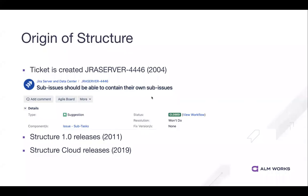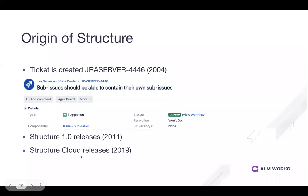Where did Structure start? The origin of Structure is actually this JIRA ticket — JIRA Server 446, created in 2004. Somebody suggested that we should be able to show sub-issues being contained within their own sub-issues, so like an epic has stories underneath or a story has subtasks underneath. Atlassian said they weren't going to do it, so this basically is the genesis of Structure. It took a little while until we got to Structure 1.0 in 2011, and here we are in 2022 on Structure version 8. Cloud released a little bit later and is still playing catch-up, but everything in the on-prem version is basically committed to cloud.